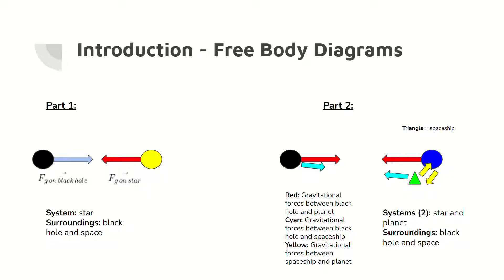The free body diagrams for part one and part two of the lab are shown. In part one, the gravitational force on the star is used to find the mass of the black hole. In part two, multiple gravitational forces are used to find the initial velocity. The system in part one is the star and the surroundings is the black hole. In part two, the system is the spaceship and planet and the surroundings is the black hole.